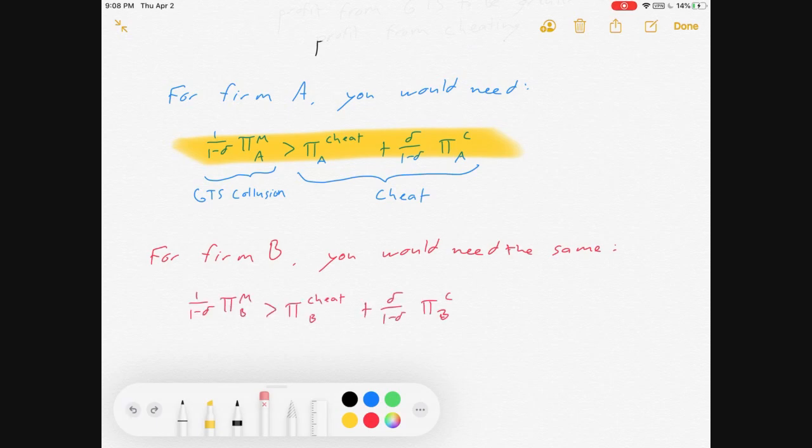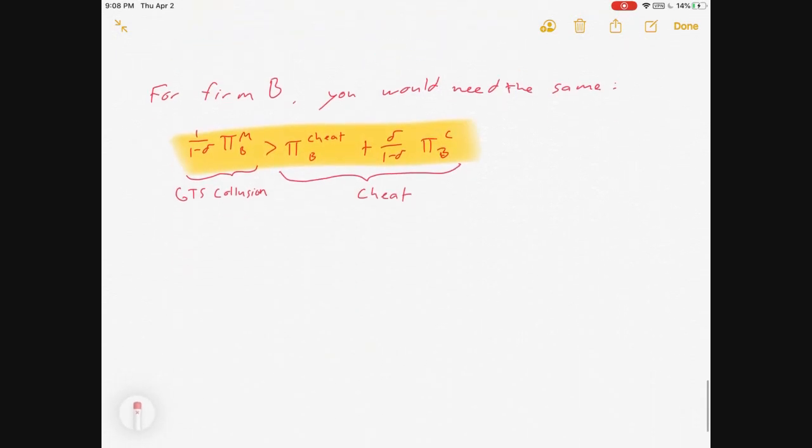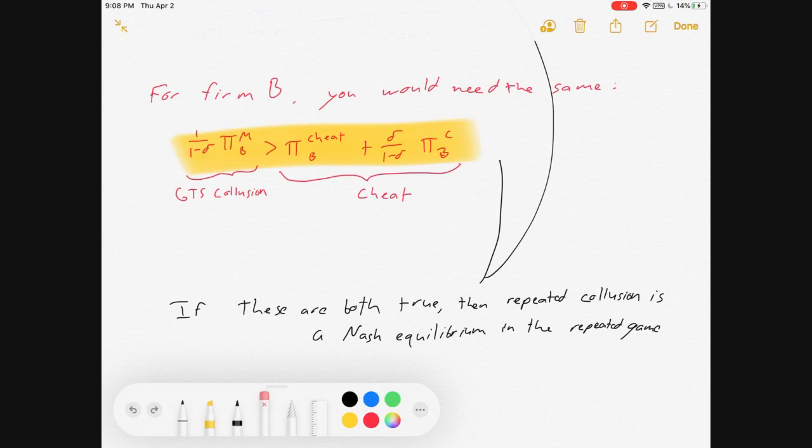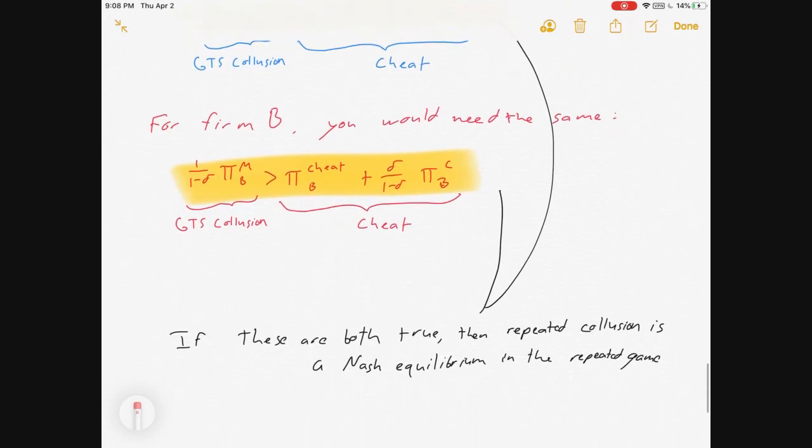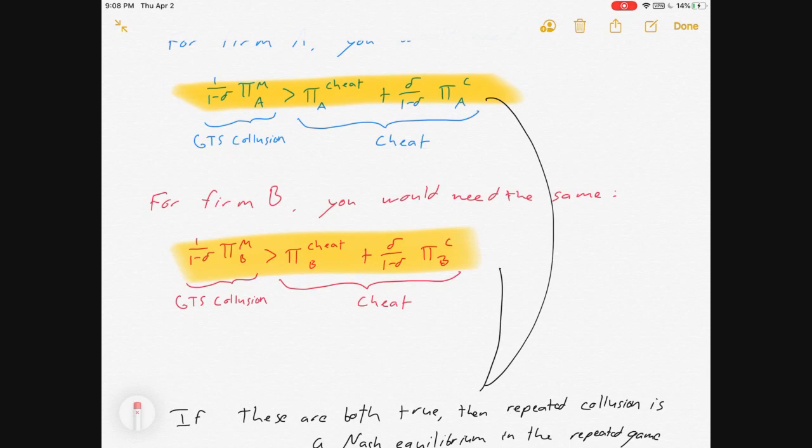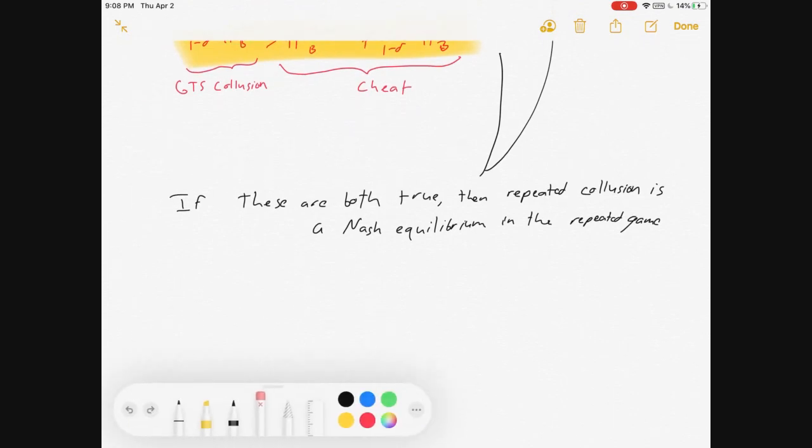For firm B, you get the same idea. You need for their collusion to be more profitable than cheating and then Cournotting. So, that hasn't changed. They look the same that way. If those are both true, if both of those equations are true, then repeated collusion is a Nash equilibrium in the repeated game. So, let me repeat that. If both of those equations are true, then collusion is a Nash equilibrium.